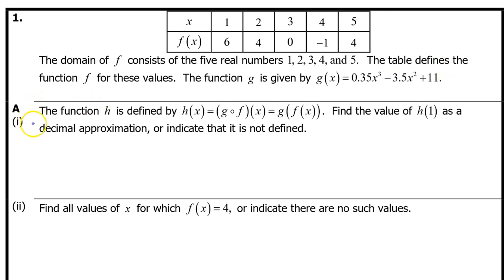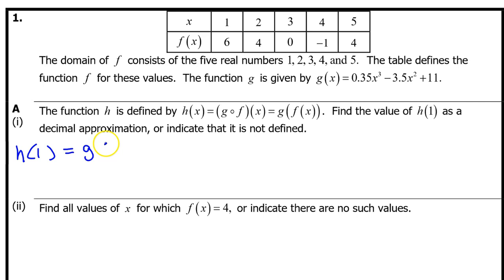A Part 1. The function h is defined by h of x equals g of f of x. This notation means exactly the same thing as g composed with f. Find the value of h at 1 as a decimal approximation, or indicate that it is not defined. Well, h at 1 means plug in 1 for x, so h at 1 equals g at f at 1. Working from the inside out, f at 1 is 6, so substituting 6 in for f at 1, we get g at 6.